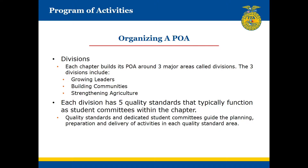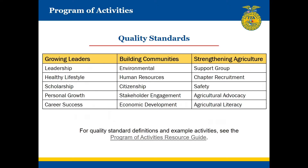Our POA is organized into three divisions with five subcategories — each is called a quality standard. Each officer is going to select one of the quality standards that they can best plan an activity around. For each quality standard, officers should recruit a team of members — we're going to call that a committee. Those members should not be FFA officers. Then that committee can plan, develop, and carry out the activity.